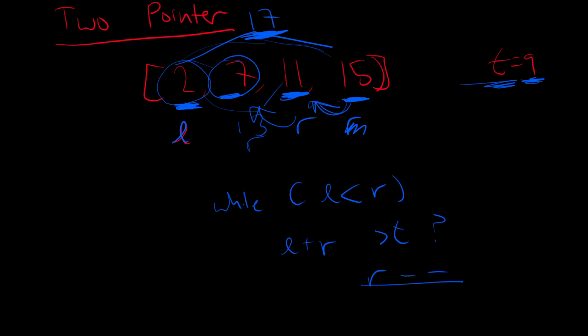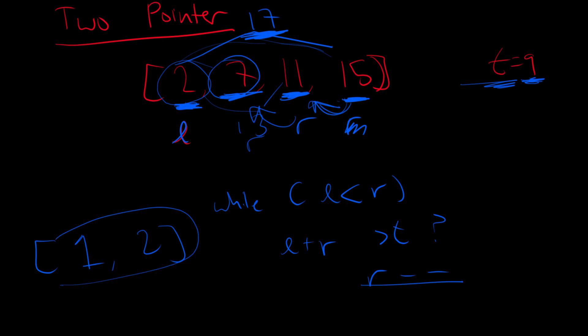Remember, because it's a one-indexed array, we need to add one to each index. So it's 0 plus 1 equals 1, and 1 plus 1 equals 2. We return [1, 2] — that's the actual solution.